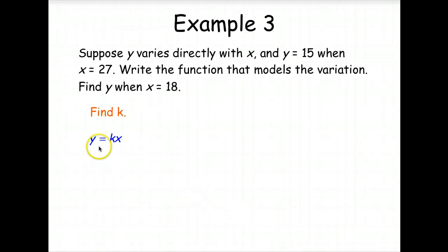Well, we can find K because we know that for direct variation, Y is equal to KX. And here we're told that it varies directly, and Y is 15, and X is 27. So we're going to substitute in 15 and 27 and solve for K. So 15 over 27 is 5 ninths.